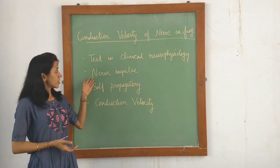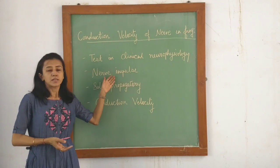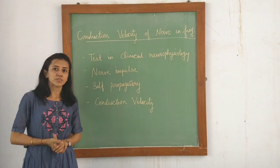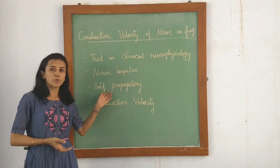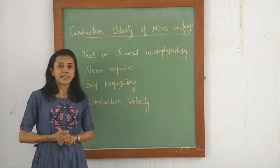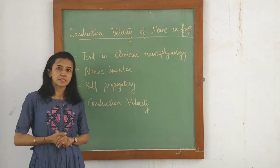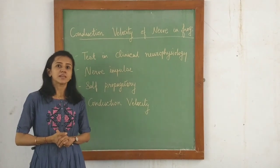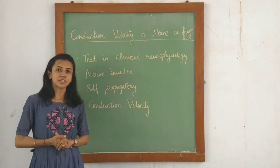First of all, what is nerve impulse? Nerve impulse is an electrochemical change traveling across the cell membrane. It is self-propagatory in nature. The recording of the speed at which this nerve impulse travels across biological membrane like nerve is known as conduction velocity of nerve.